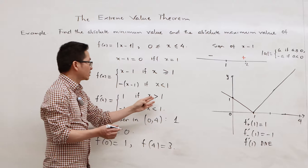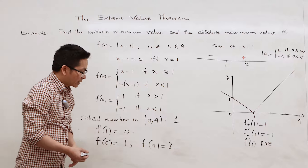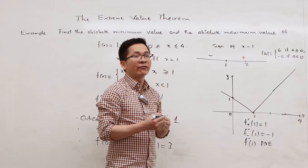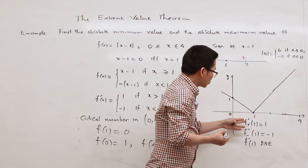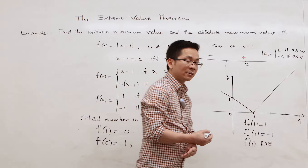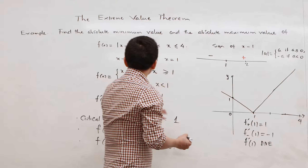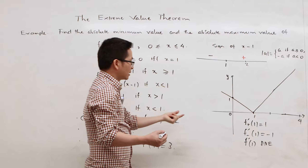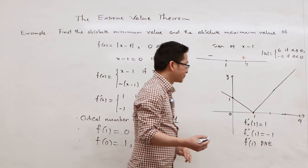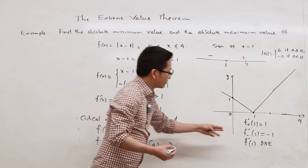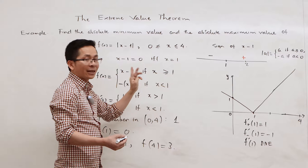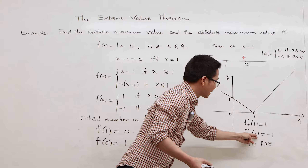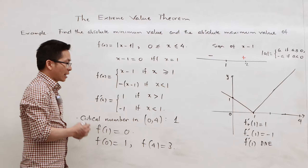We have to be very careful about the derivative of the function at x = 1. In fact, the derivative of f at 1 does not exist. To justify this, we compute the right derivative and the left derivative at 1. For the right derivative, we use the formula for x greater than 1 and get 1. For the left derivative, we use the formula for x less than 1 and get minus 1. Since the left and right derivatives are not equal, the derivative of f at 1 does not exist.